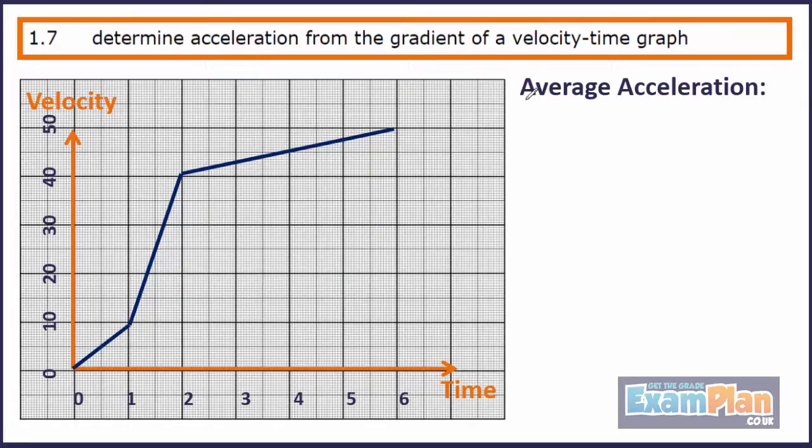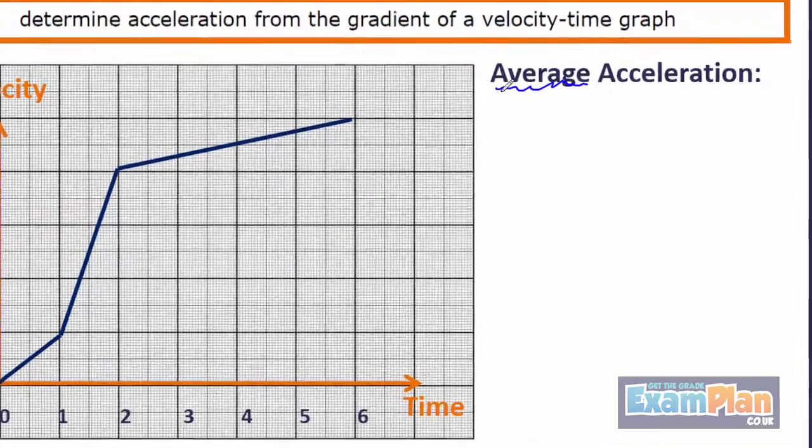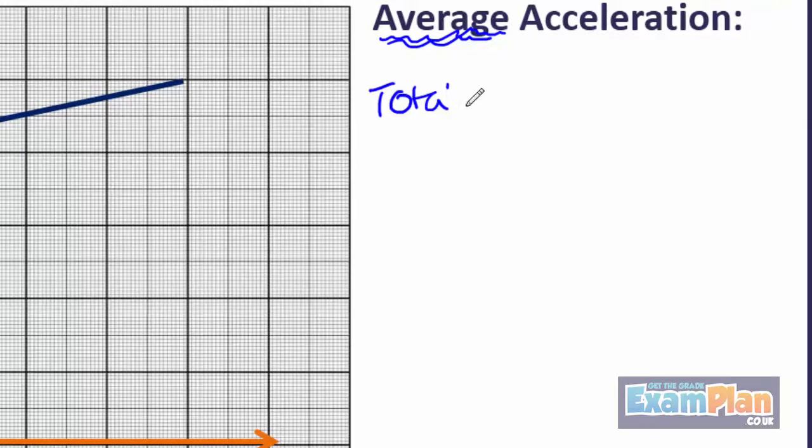To find average acceleration, we need to do the total change in velocity divided by the total time.